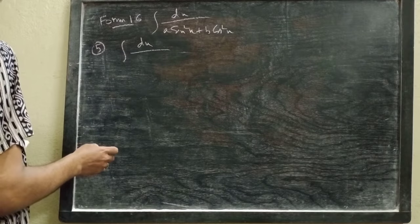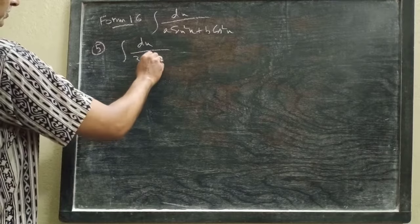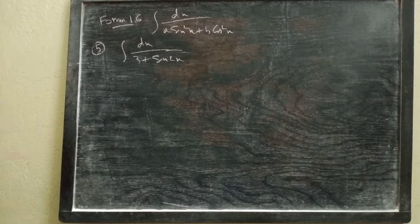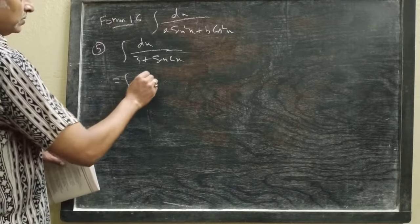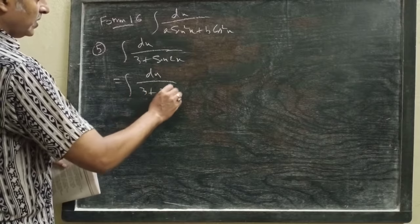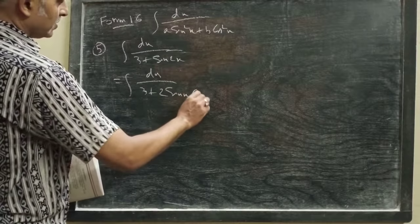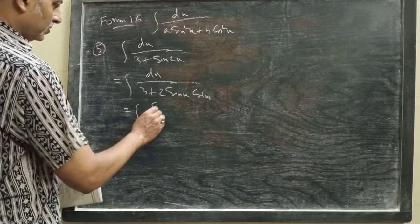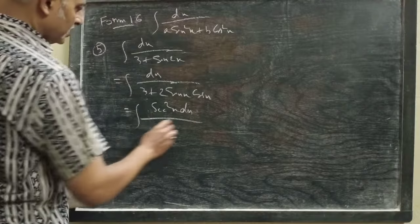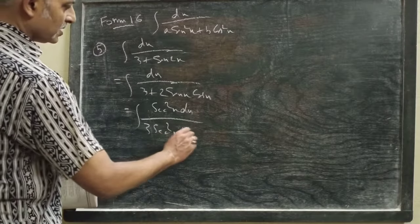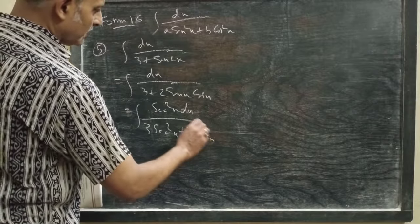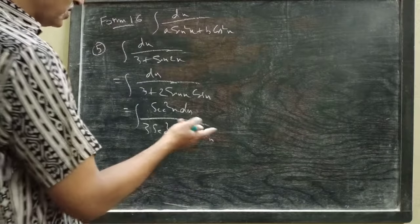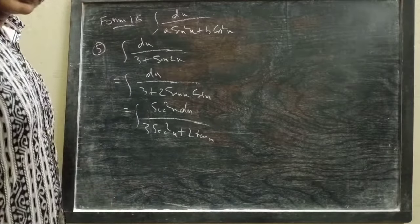Next: dx by 3 + sin 2x. We can write sin 2x = 2·sin x·cos x. So the integral becomes dx by (3 + 2·sin x·cos x). Now multiply by sec²x. You get sec²x dx; in the denominator, 3·sec²x = 3·tan²x + 3, and 2·sin x·cos x·sec²x = 2·tan x·sec x·(cos x / cos x) ... that is 2·tan x. So denominator becomes 3·tan²x + 2·tan x + 3.